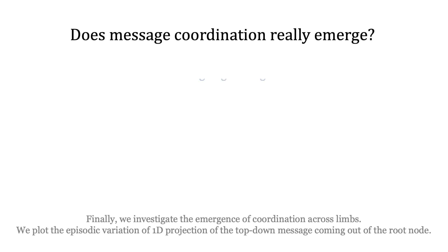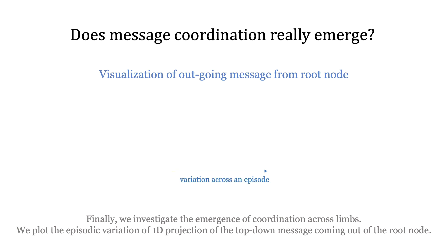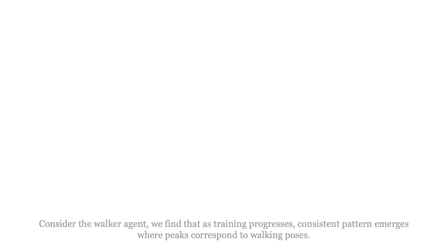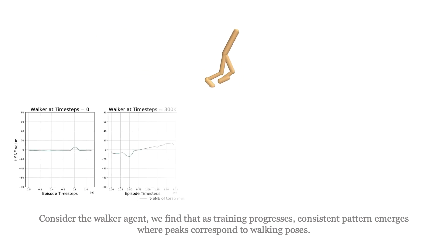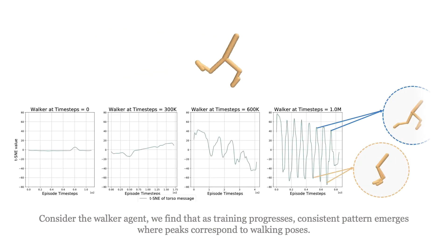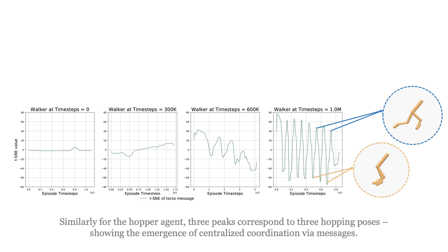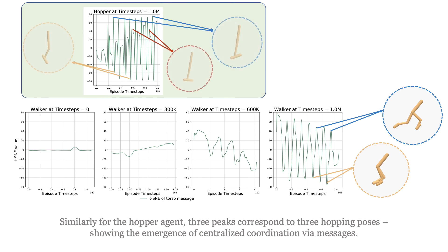Finally, we investigate the emergence of coordination across limbs. We plot the episodic variation of the 1D projection of the top-down message coming out of the root node. For the walking agent, we find that as training progresses, a consistent pattern emerges where peaks correspond to walking poses. Similarly, for the hopper agent, 3 peaks correspond to 3 hopping poses, showing the emergence of centralized coordination via messages.